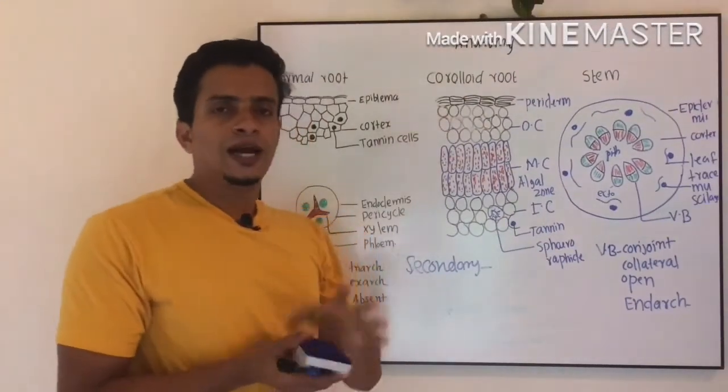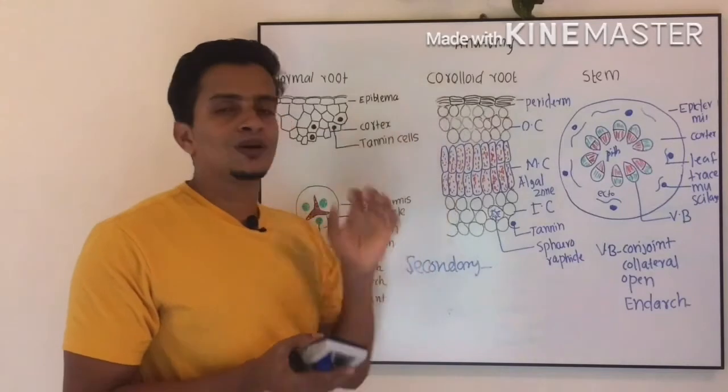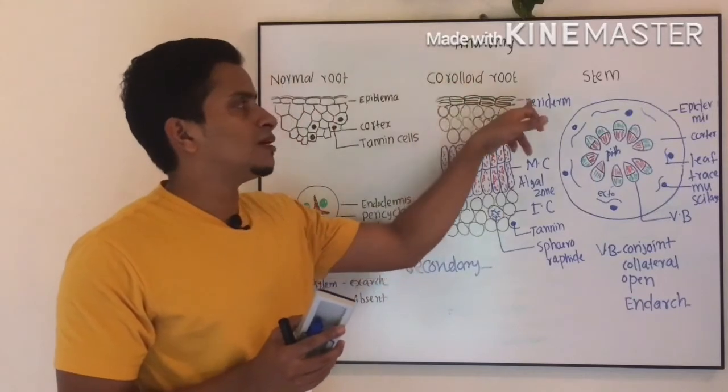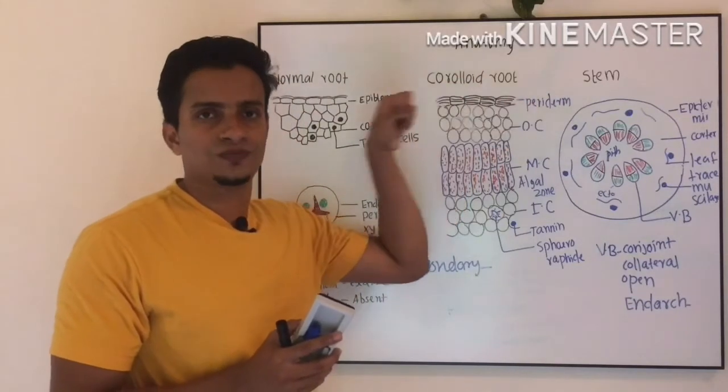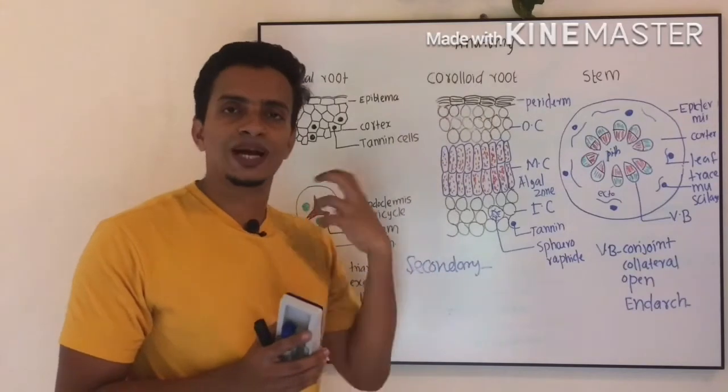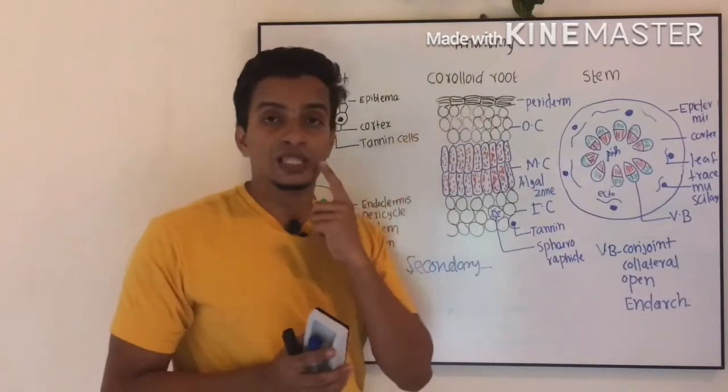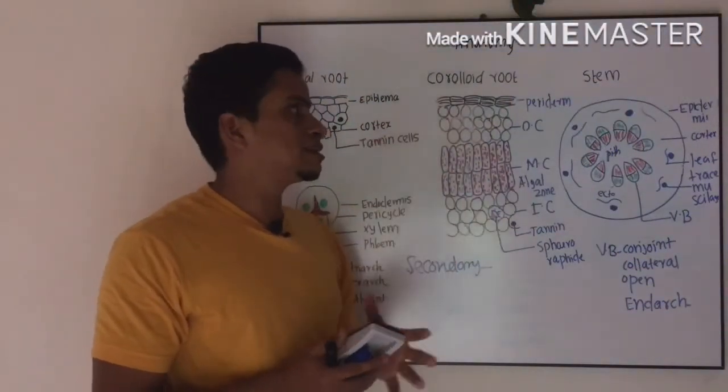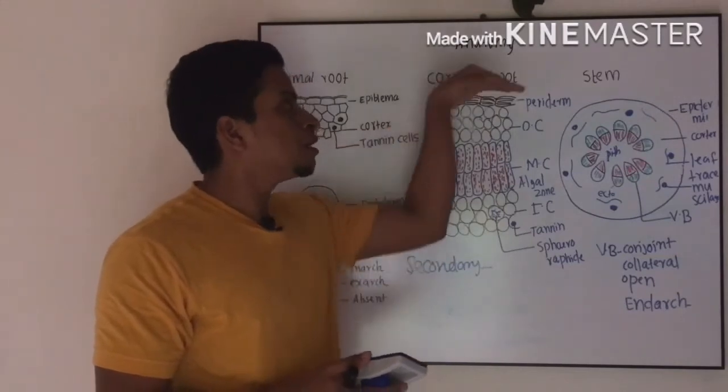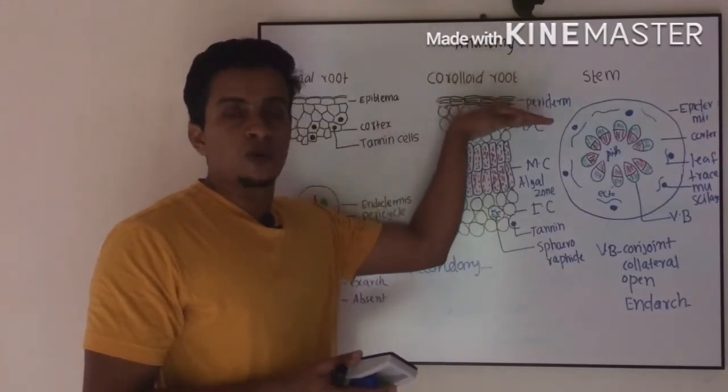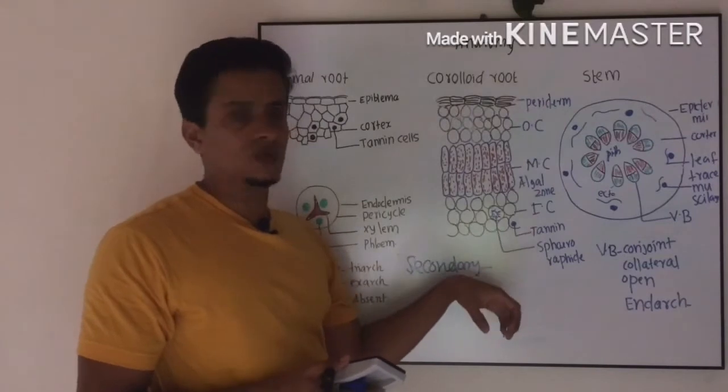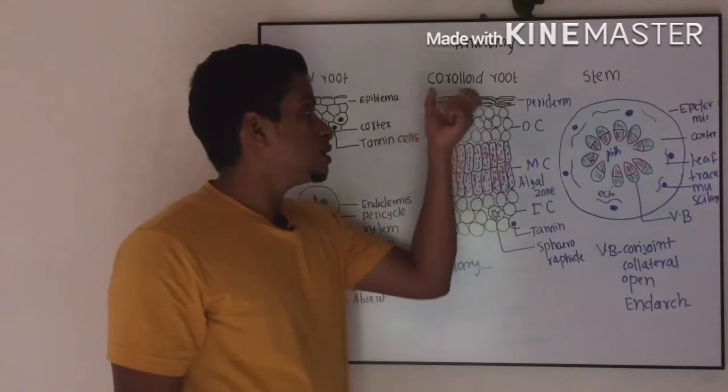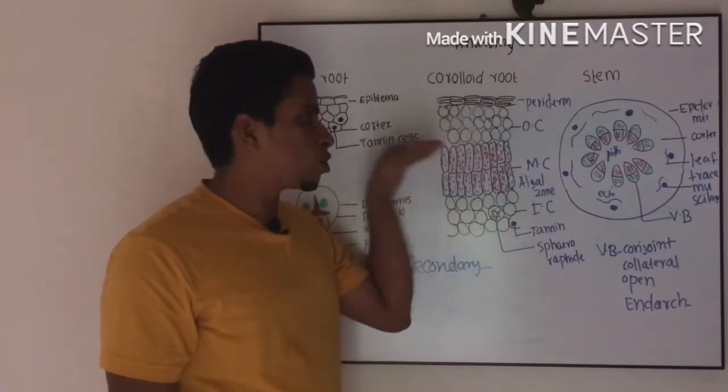Coming to the second one, coraloid root. Internal anatomy of coraloid root is similar to normal root except a few differences. Externally, which is covered by periderm, which is the major difference between normal root and coraloid root.